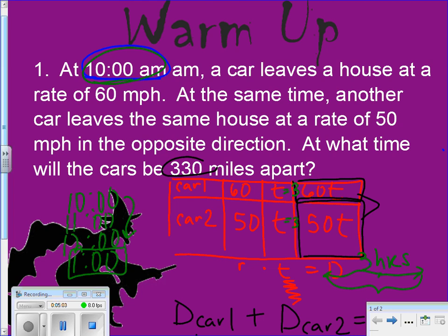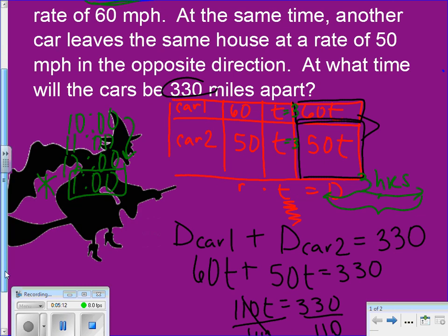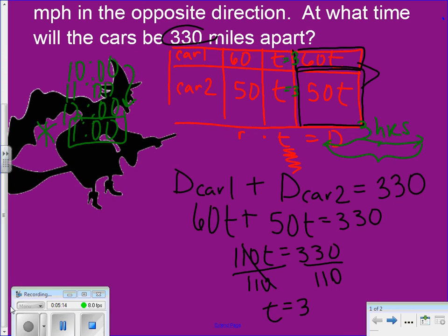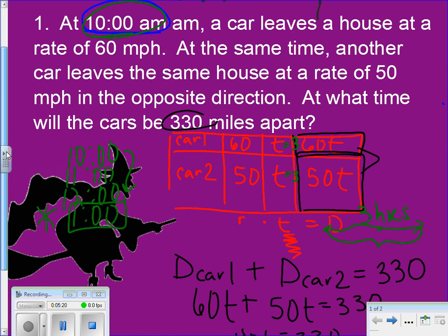So I believe that at one o'clock they will be 330 miles apart. So that would be our answer. Now most of the problems we've done up to this point I was looking for how many hours would it take them to do this, but this question had a little twist because you had to relate that back to a time. So from 10 o'clock plus three hours would give us a time of one o'clock in the afternoon.